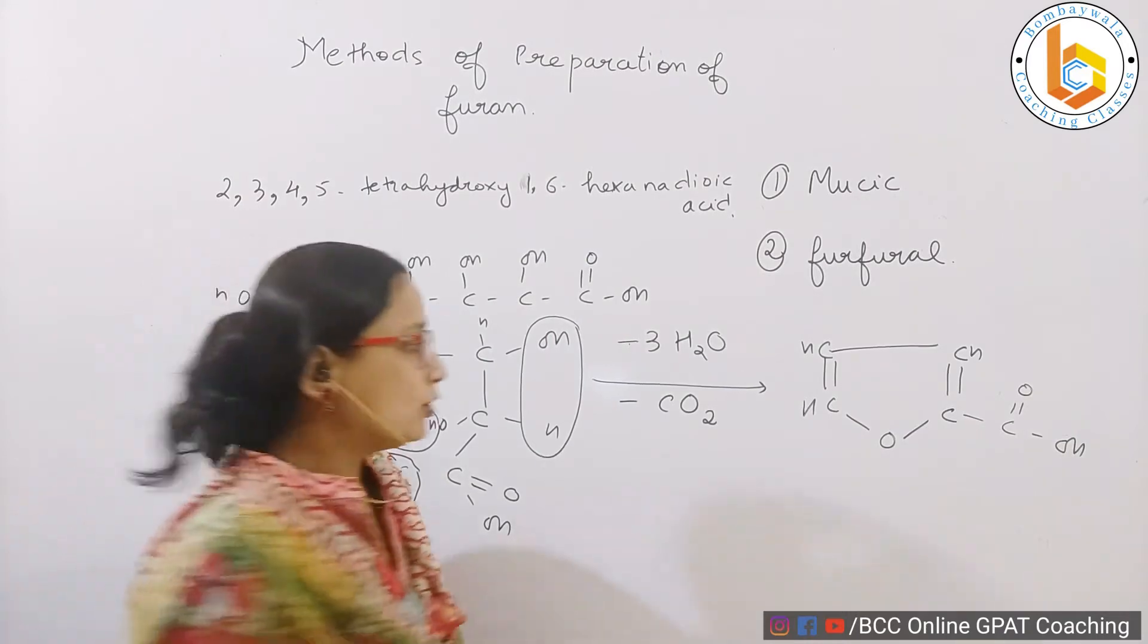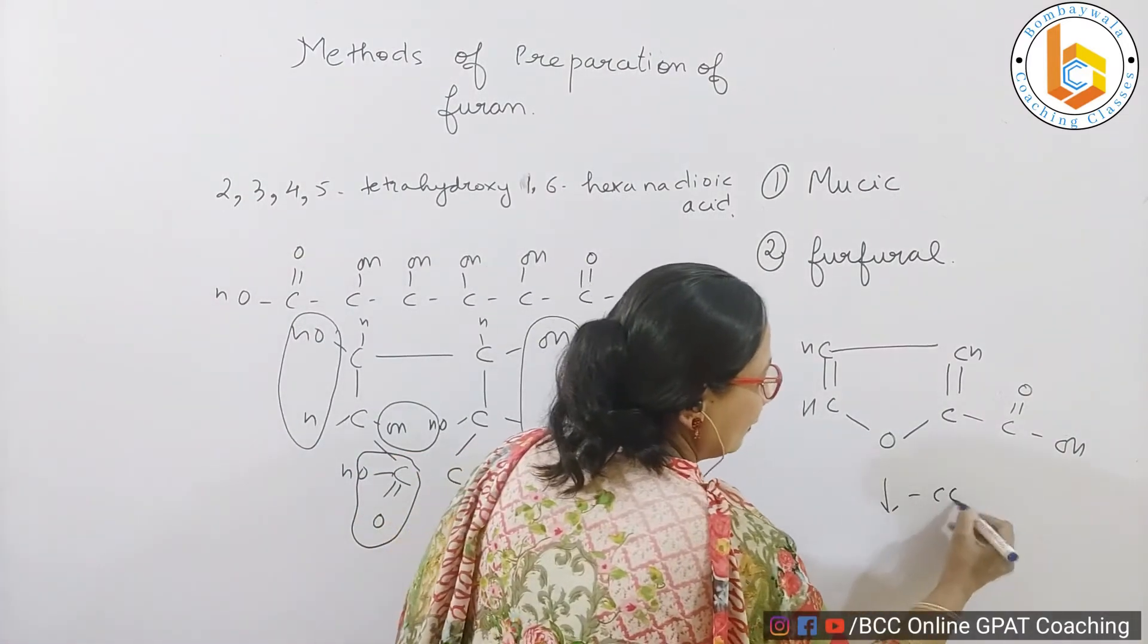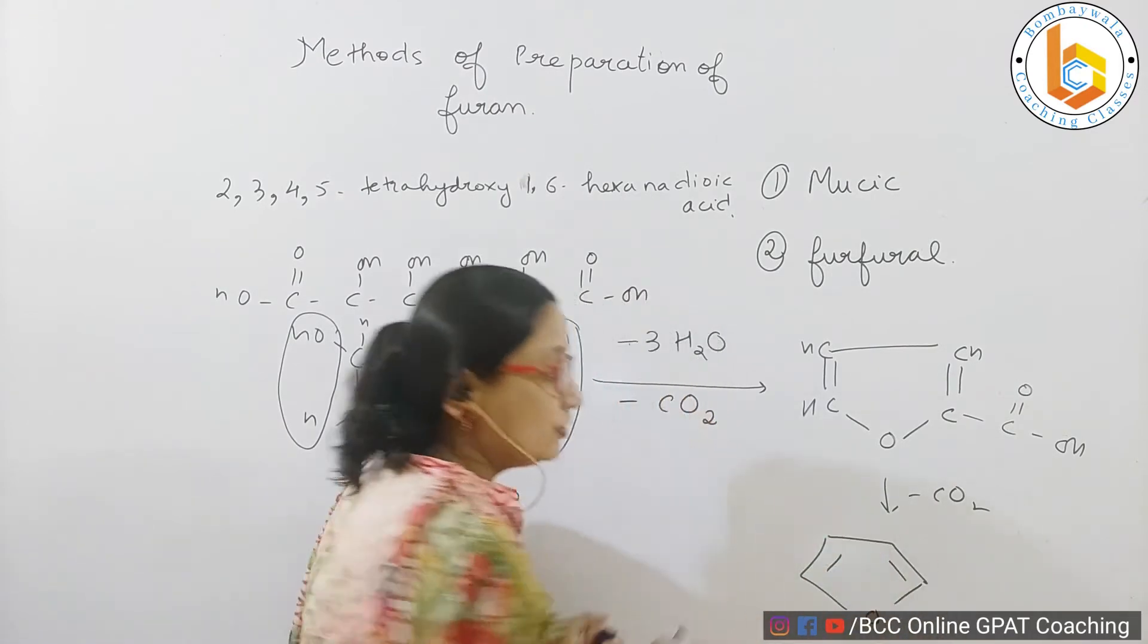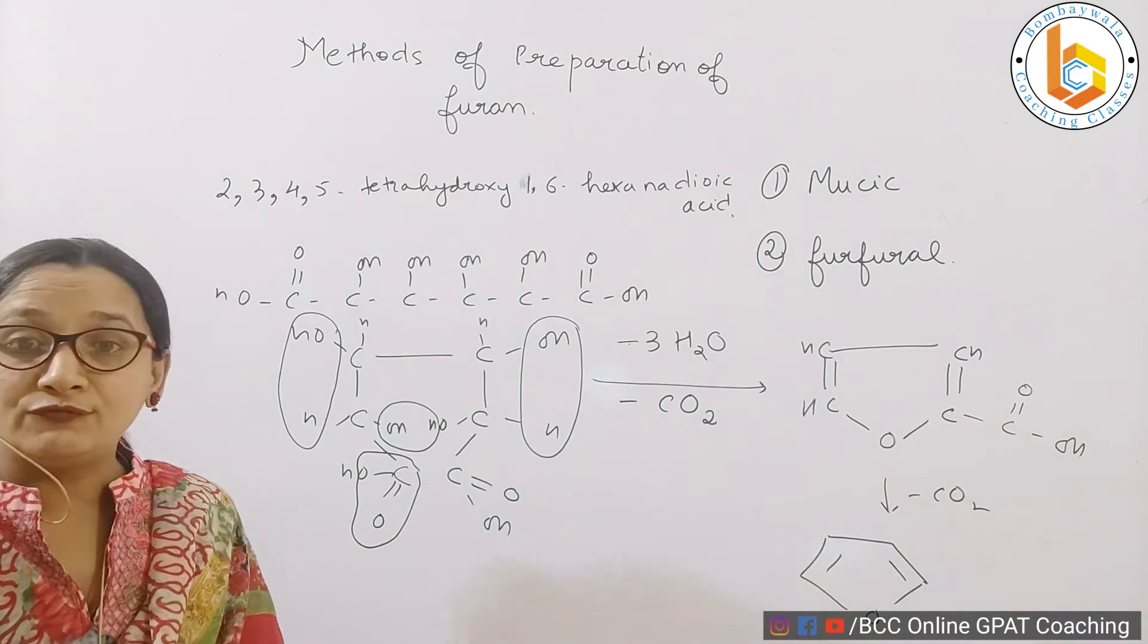This, again, by loss of carbon dioxide, will give you nothing but furan is formed. So this is how from mucic acid, furan is formed.